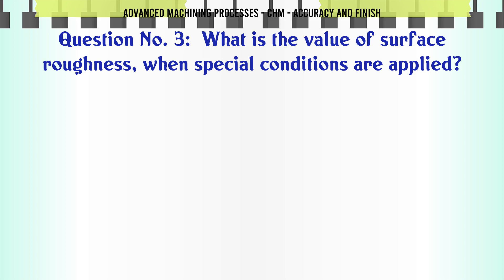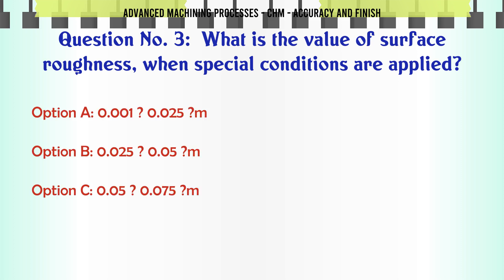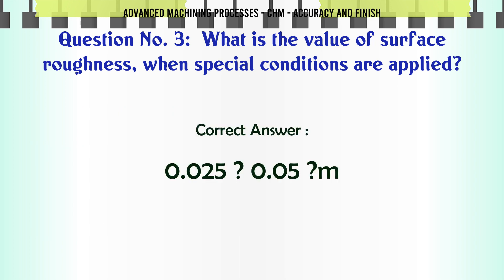What is the value of surface roughness when special conditions are applied? A. 0.001–0.025m. B. 0.025–0.05m. C. 0.050–0.075m. D. 0.075–0.1m. The correct answer is 0.025–0.05m.